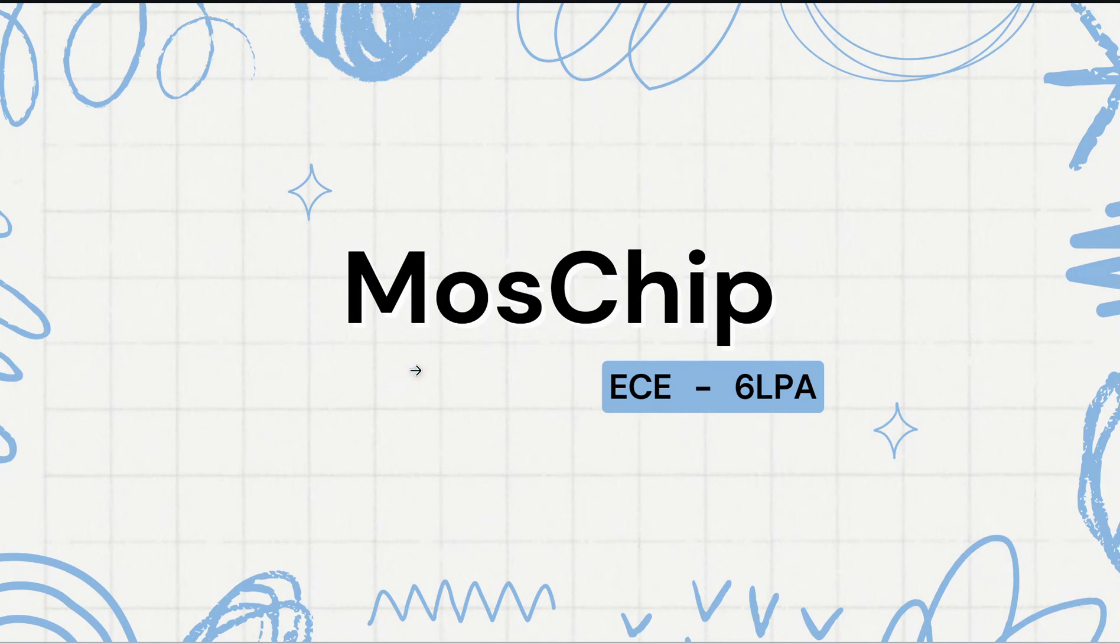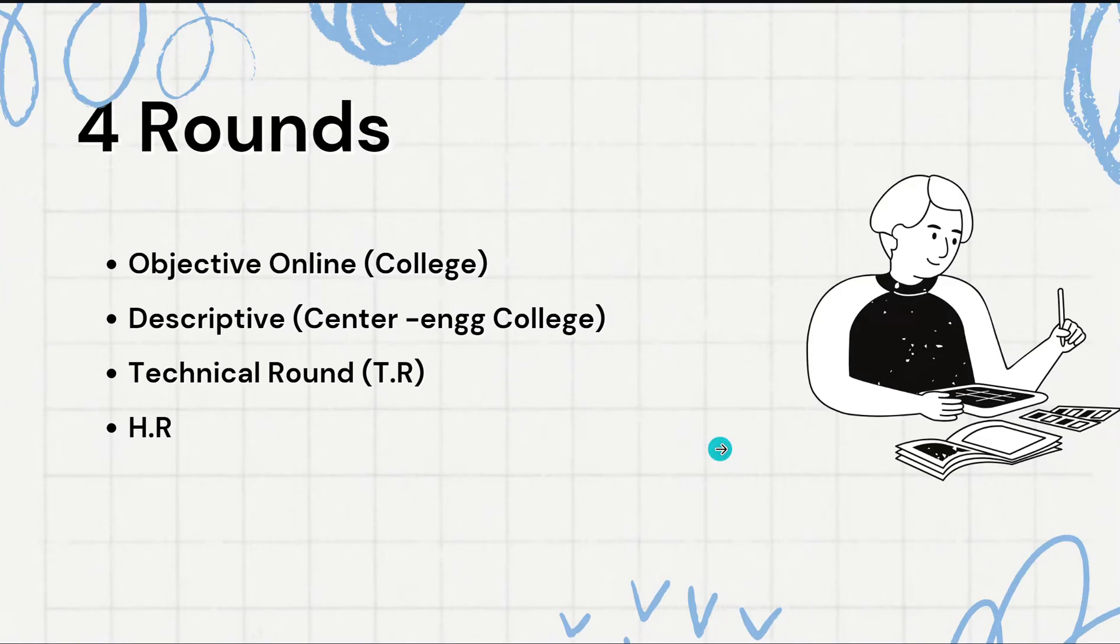Hello everyone, today we are going to see the on-campus placement pattern for MosChip company, which is 6 LPA per annum.